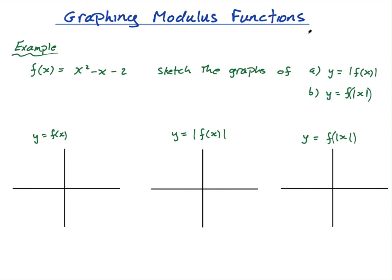What does modulus mean? The modulus of negative 5, sometimes called the absolute value of negative 5, is 5 — it's the size of the number. Think of it like speed: if you're reversing, your velocity is negative 50 km/h, but your speed is 50 km/h. That's the modulus of the velocity.